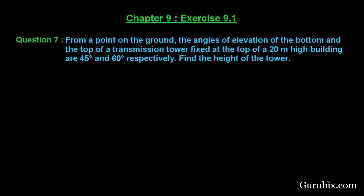Welcome friends. Let us solve question number 7 of exercise 9.1 of chapter 9. The question says: from a point on the ground, the angle of elevation of the bottom and the top of a transmission tower fixed at the top of a 20 meter high building are 45 degrees and 60 degrees respectively. Find the height of the tower. This is a very interesting question — let us solve it.